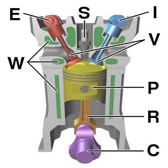An internal combustion engine is a heat engine where the combustion of a fuel occurs with an oxidizer in a combustion chamber that is an integral part of the working fluid flow circuit. In an internal combustion engine, the expansion of the high temperature and high pressure gases produced by combustion applies direct force to some component of the engine, typically to pistons, turbine blades, rotor or a nozzle. This force moves the component over a distance, transforming chemical energy into useful mechanical energy.